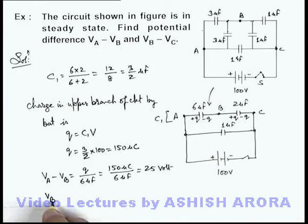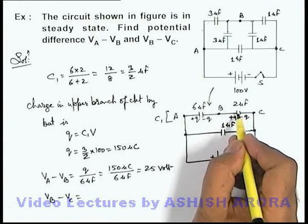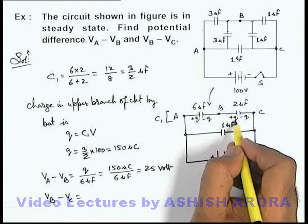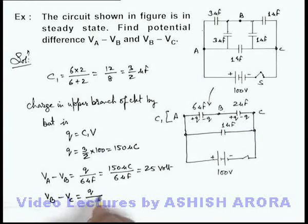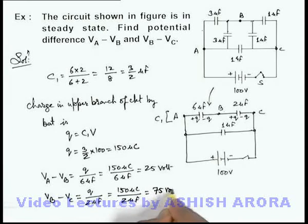And if we calculate V_B minus V_C, that is the potential difference across this 2 microfarad capacitor where charge is q, so it can be written as q by 2 microfarad. As we know potential difference across any capacitor is q by C. So this will be 150 microcoulomb by 2 microfarad, that will be 75 volt.